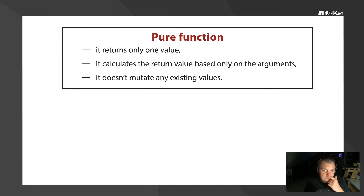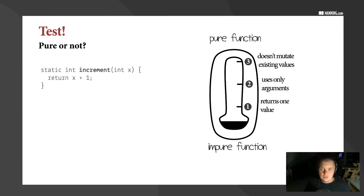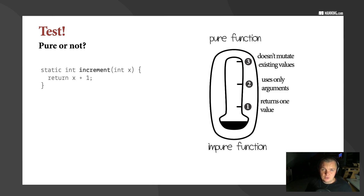We need a pure function that will return one value and calculate the return value based only on the arguments, and doesn't mutate any existing values. Only those three things mean that we deal with a pure function. We'll see five of them and find out whether they are pure or not — this is very important to understand when you read or write code. In functional programming, you want to write pure functions, and we'll see why in a bit.